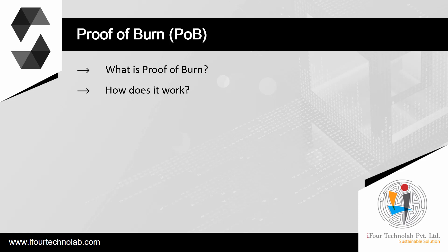Typically, these addresses — also known as eater addresses — are randomly generated without having any private key associated with them. The process of burning coins reduces market availability and creates an economic scarcity, causing a potential increase in value. Coin burning is another way of investing in the security of the network. Instead of investing electricity, labor, and computational power, proof-of-burn blockchains are secured by the investment made through coin burns. Similarly to proof-of-work blockchains, proof-of-burn systems will provide block rewards to miners, and within a certain period the rewards are expected to cover the initial investment of the burned coins.